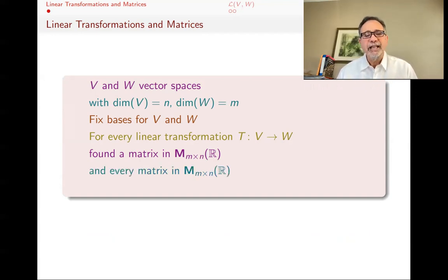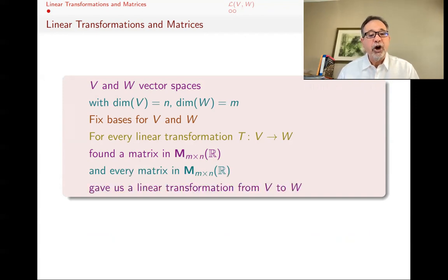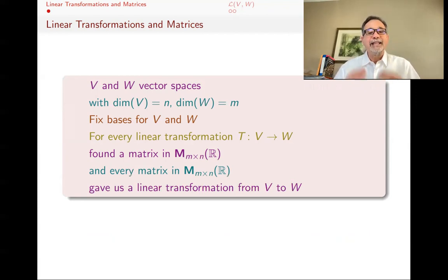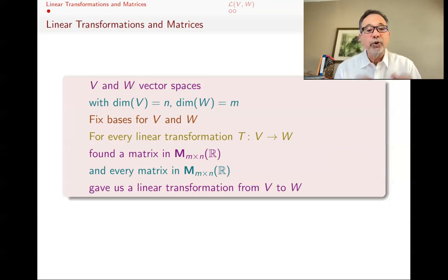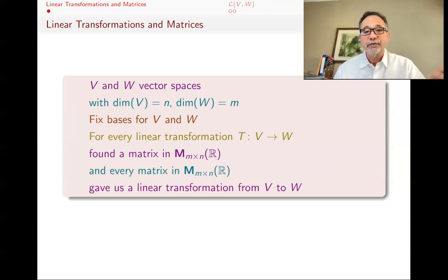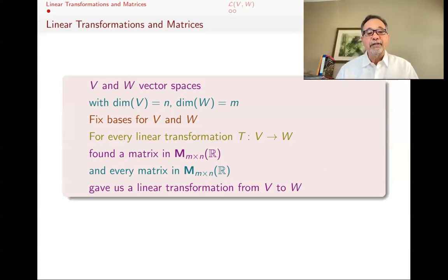Every M by N matrix also gives you a linear transformation from V to W. So if you have a linear transformation, you can get a matrix; if you have a matrix, you can get a linear transformation. But going back and forth depends on having fixed bases for V and W — a basis for V and a basis for W. That's what allows you to translate between linear transformations and matrices.